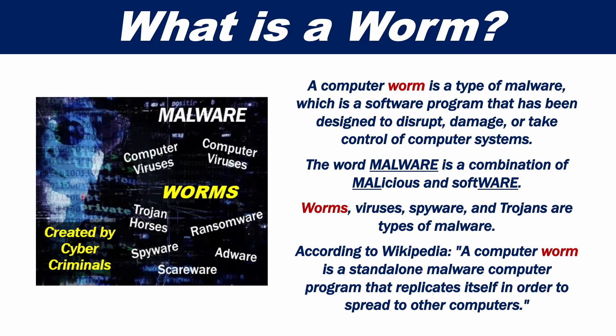The word malware is a combination of malicious and software. Worms, viruses, spyware, and trojans are types of malware. According to Wikipedia, a computer worm is a standalone malware computer program that replicates itself in order to spread to other computers.